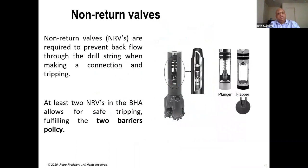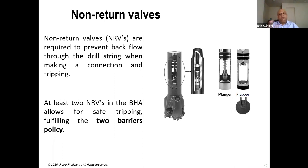Non-return valves are installed in the drill string to prevent backflow of fluids from the well into the drill string to surface. The drill string is the shortest path for wellbore fluids or kicks to reach surface because of its narrow ID, so it must be protected. These NRVs are mandatory when dealing with MPD, and you need to have two NRVs in the BHA.